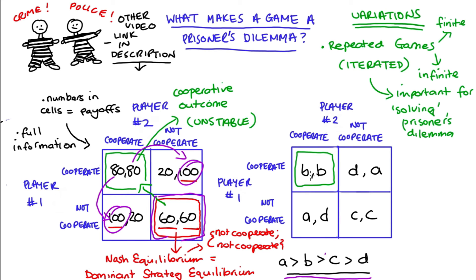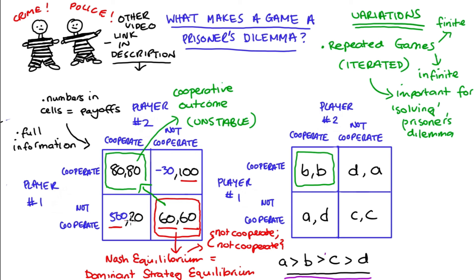Another variation students often ask about concerns the symmetrical nature of the payoffs. In the games described, the payoffs mirror one another - both get 80 cooperating, both get 60 in the Nash equilibrium, both have a best of 100 and worst of 20. In an asymmetric prisoner's dilemma, payoffs don't mirror one another. For instance, changing player one's payoffs to 500 and negative 30 means player one has much more to lose than player two, but the key outcomes - failure of cooperation and a suboptimal Nash equilibrium - remain.